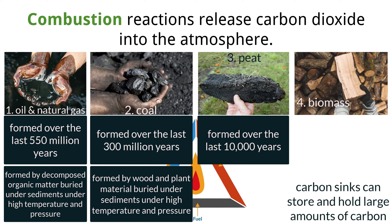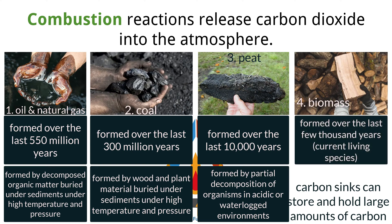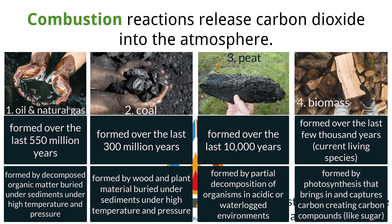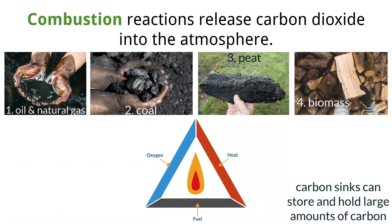Peat is a material formed over the past 10,000 years due to the partial decomposition of organisms in acidic and waterlogged environments. Biomass in trees has accumulated over the past few thousand years, driven by photosynthesis that takes in carbon to create sugars and other molecules. These four materials all store carbon and can undergo a chemical reaction called combustion, in which they are burned in the presence of oxygen, producing energy and releasing carbon dioxide into the air.